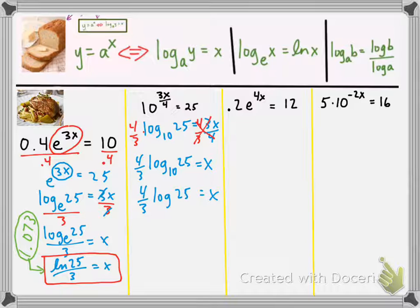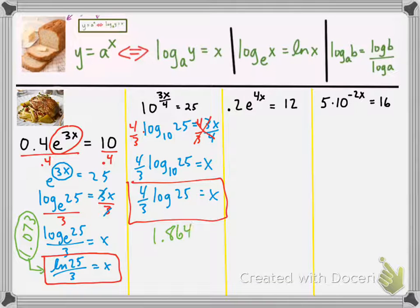You can leave the 10 in, leave the 10 out. You just do have to know that log of 25 is the same as log base 10 of 25. And we can multiply that together too. So, we have 4 thirds times log of 25. And we get 1.864. So, I'm going to write that in green as well. So, 1.864 is equal to x.